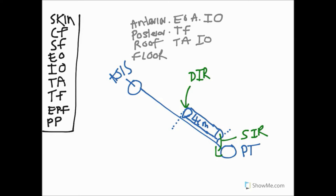The floor of the inguinal canal — the inferior wall — is formed in part by the inguinal ligament, which is rolled under the free margin of the lowest part of the aponeurosis of the external oblique, forming a gutter or trough. So the floor is the inguinal ligament itself and part of the aponeurosis of external oblique. In the next tutorial we'll pick up by discussing further development of the inguinal canal and hernias.